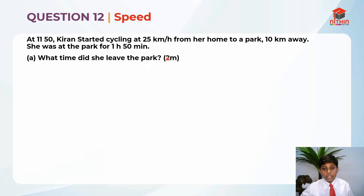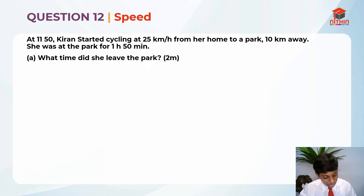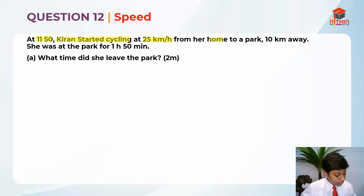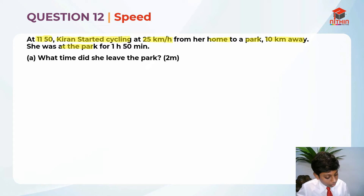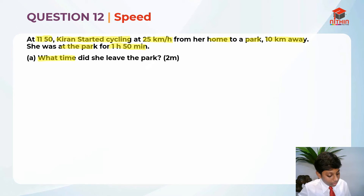Part A is awarding us two marks. Now since we have read the question, we should underline and highlight the key information. At 11:50, Kiran started cycling at 25 km per hour from her home to a park 10 km away. She was at the park for 1 hour and 50 minutes. The question is asking us: what time did she leave the park?